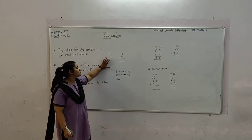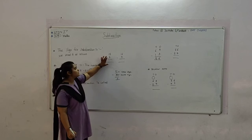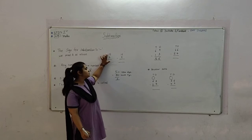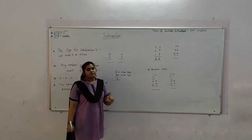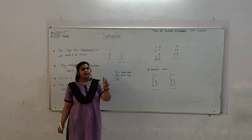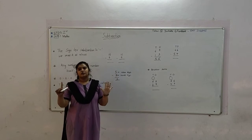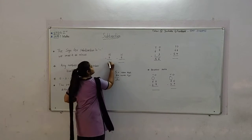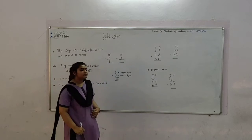Here the lower digit is 7. So keep 7 in your mind and count up to the upper digit, which is 15. 7, then 8, 9, 10, 11, 12, 13, 14, 15. So 8 is the difference.